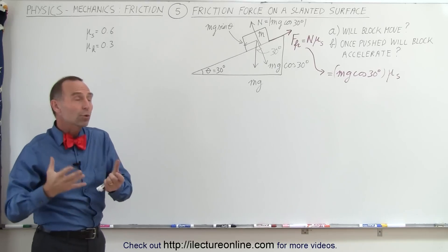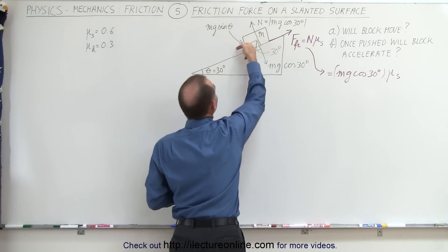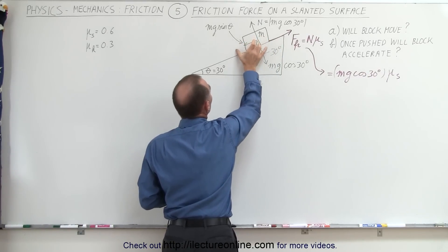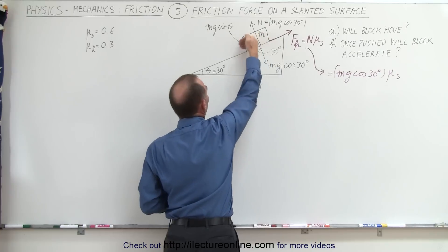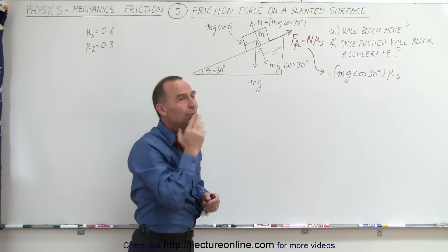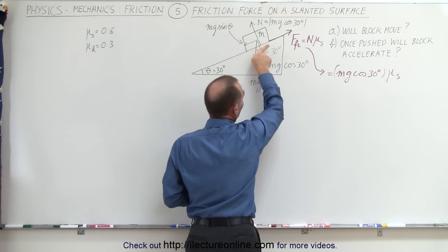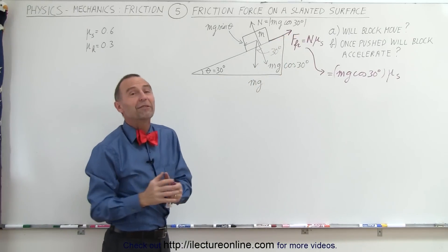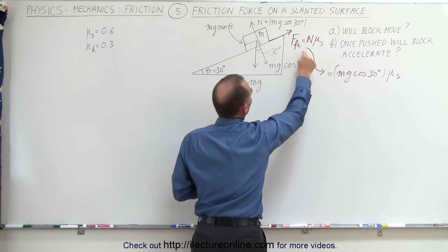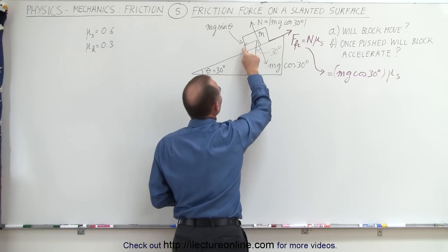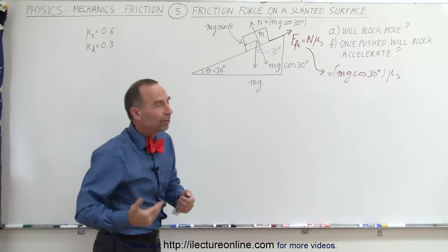How do we know if the block will move or not? The force that causes friction is mg sine theta — that is the force trying to pull the block down the incline, and friction is the reactionary force opposing it. The friction force always adjusts itself to equal the applied force until that force exceeds the maximum friction force. So we need to compare the maximum static friction force to mg sine theta.